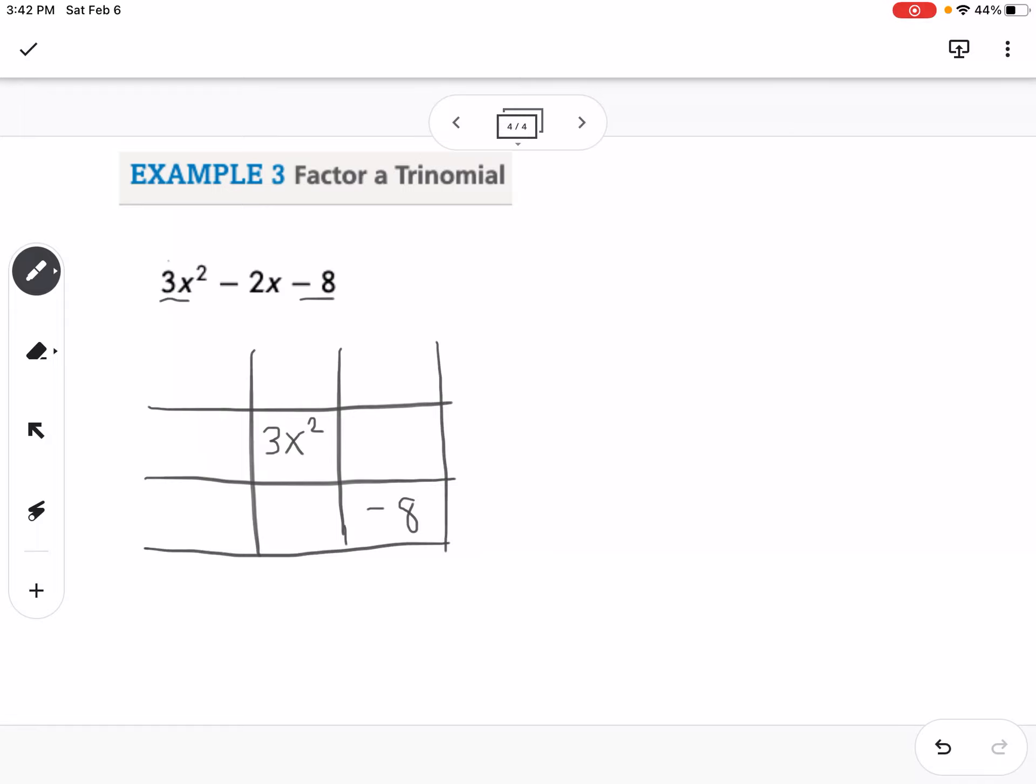Now I need to find the two x terms, and that I'm going to do the same way we did the previous problem. So I'm going to take 3 times negative 8, and I get negative 24. So I need to find two numbers that multiply to negative 24, but add to negative 2. So I'm going to list out my factors of 24. So that would be 1 and 24, we could have negative 1 and 24, or 1 and negative 24, negative 2 and 12, or 2 and negative 12, negative 3 and 8, or 3 and negative 8, negative 4 and 6, or 4 and negative 6. So I'm looking from all of those pairs which one's going to add up to a negative 2. So that looks like it would be this one right here, 4 and negative 6. So I'm going to put 4x right here and negative 6x right here.